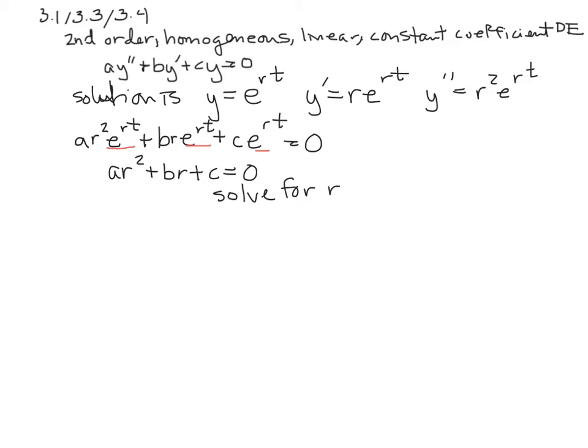Some of these will be factorable, some of them will need to use the fact that r is negative b plus or minus the square root of b squared minus 4ac all over 2a. If you don't have that formula memorized, you should, you're going to use it a lot right now. That's because we're going to solve for these roots, and once we have all these roots, that tells us what our solution looks like. It looks like the exponential to that root.